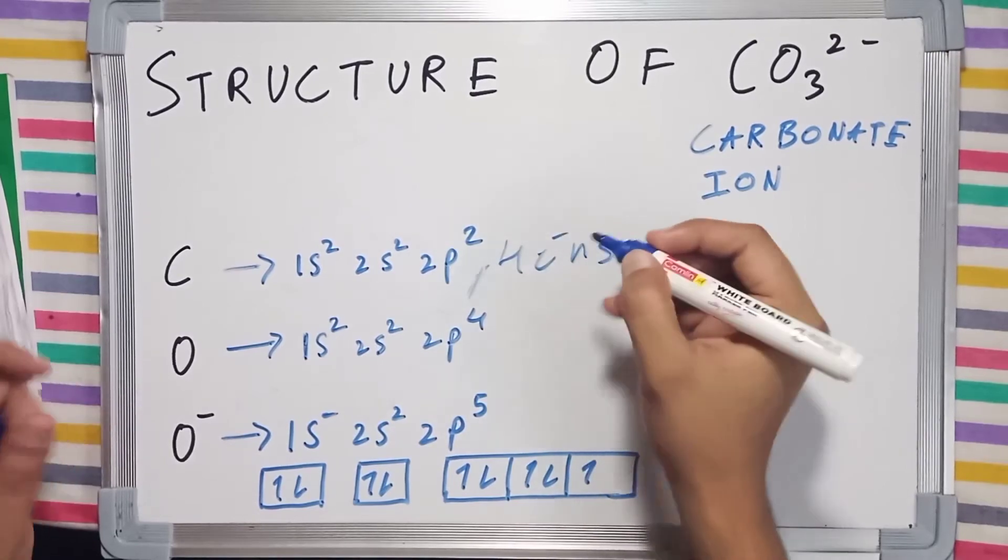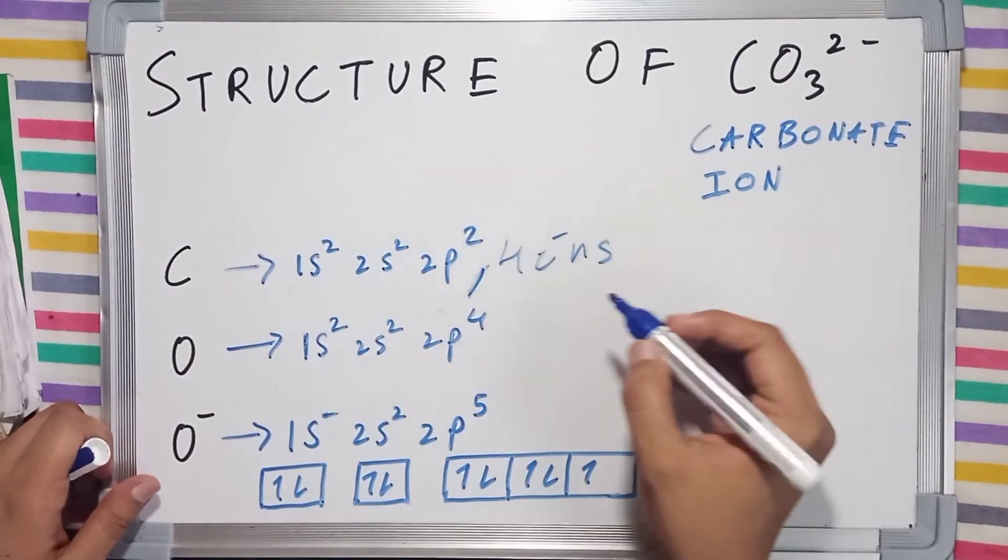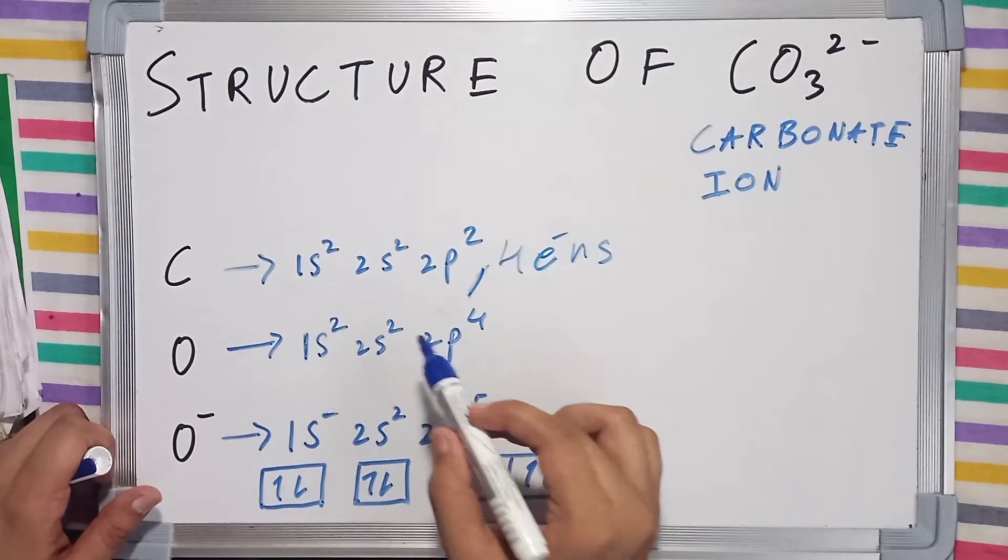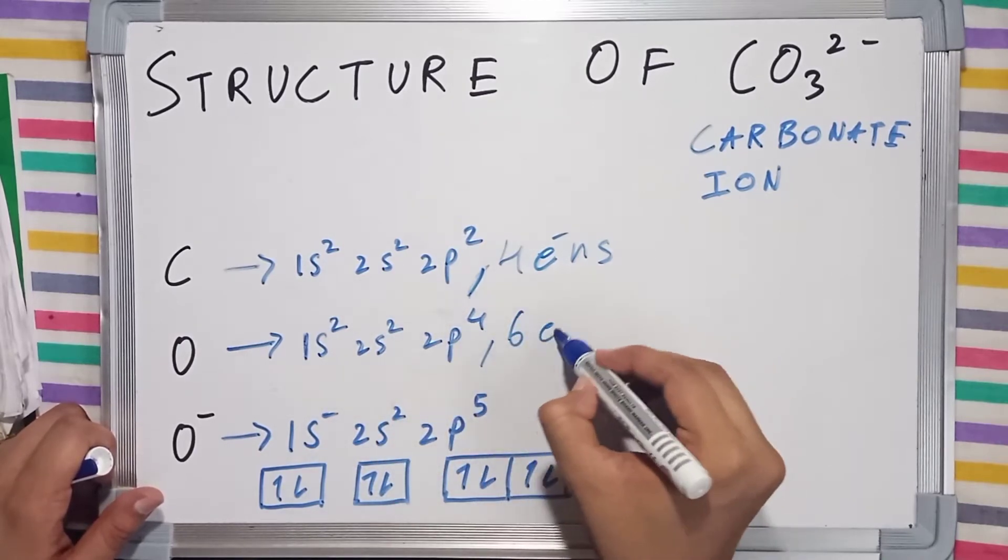Carbon has 4 valence electrons, 2 plus 2. Oxygen has 2 plus 4, which equals 6 valence electrons.